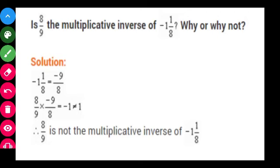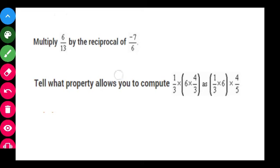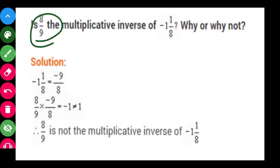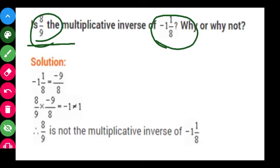The next question asks: is 8 upon 9 the multiplicative inverse of minus 1 whole 1 upon 8? To check, remember that the product of a number with its multiplicative inverse must equal 1. So multiply both numbers; if the product is 1, it is the multiplicative inverse; if not, it is not.